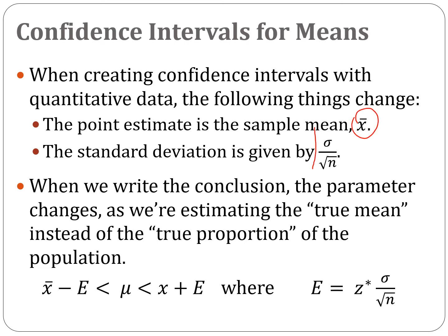The standard deviation, instead of radical pq over n, is now sigma over radical n. And when we write our conclusion — the statement that goes 'we are 95% confident that...' — instead of writing about the true proportion, we're now writing about the true mean of the population.